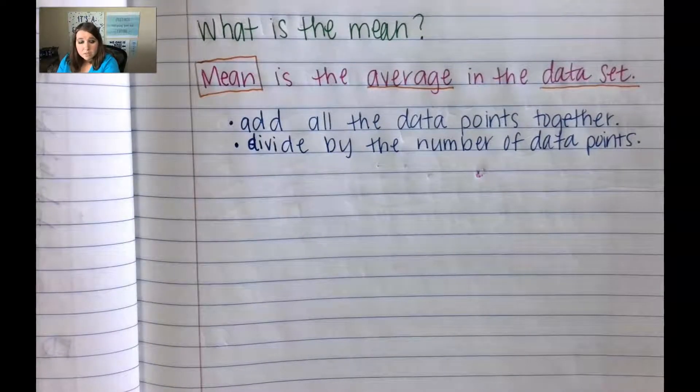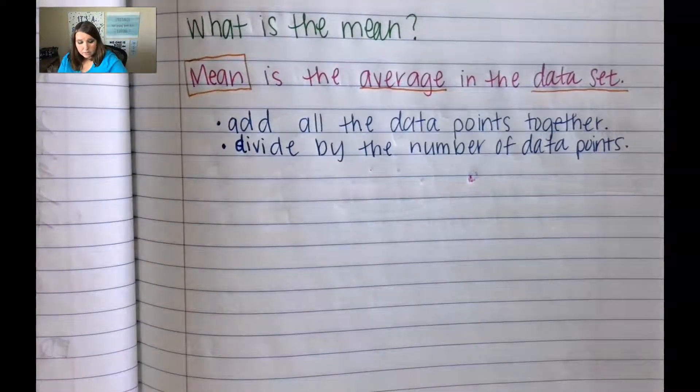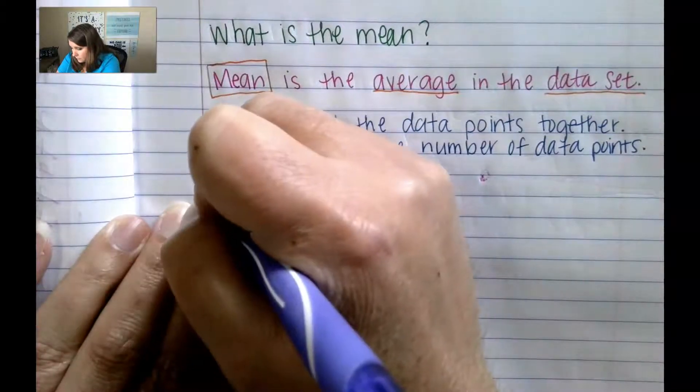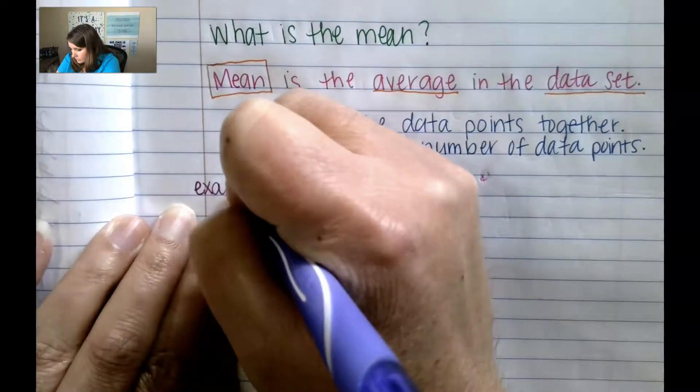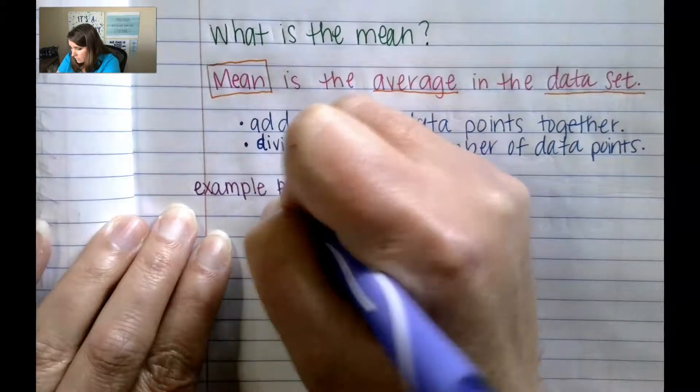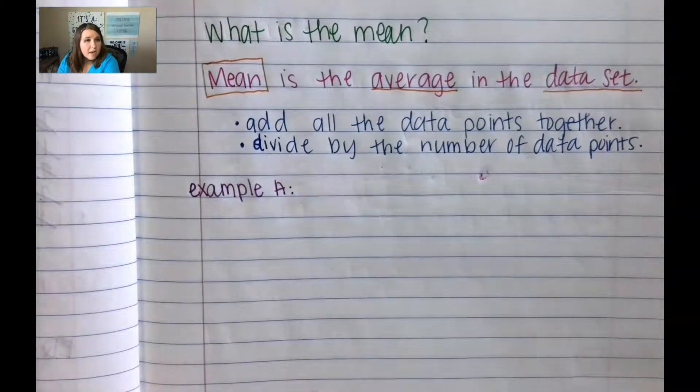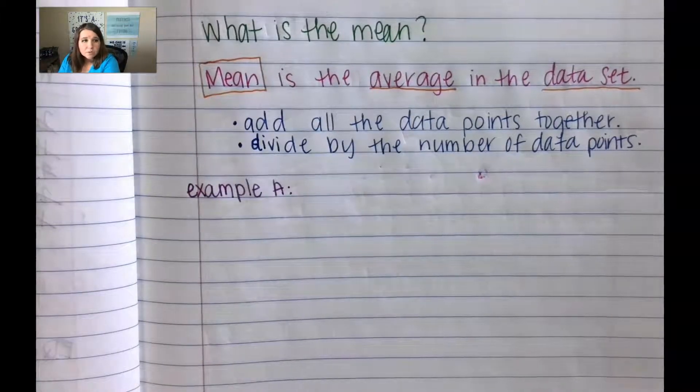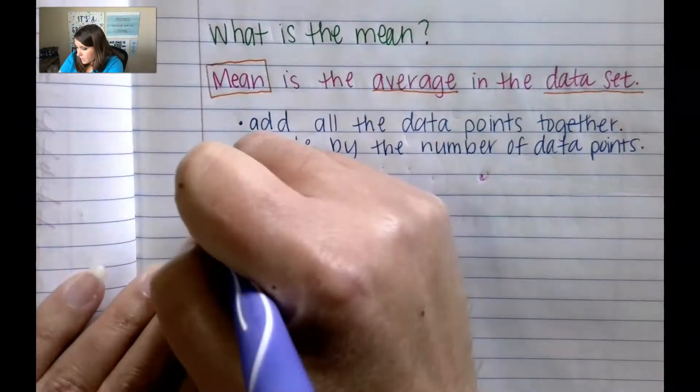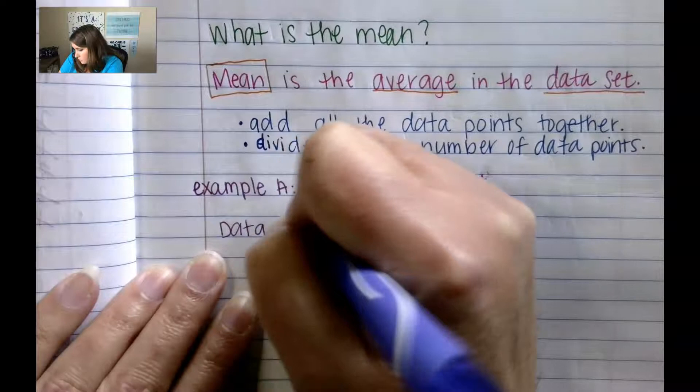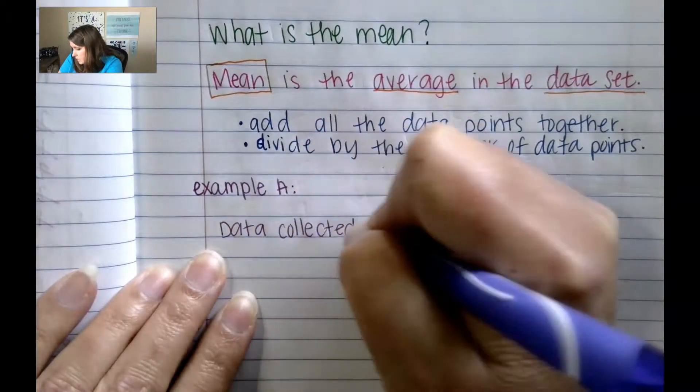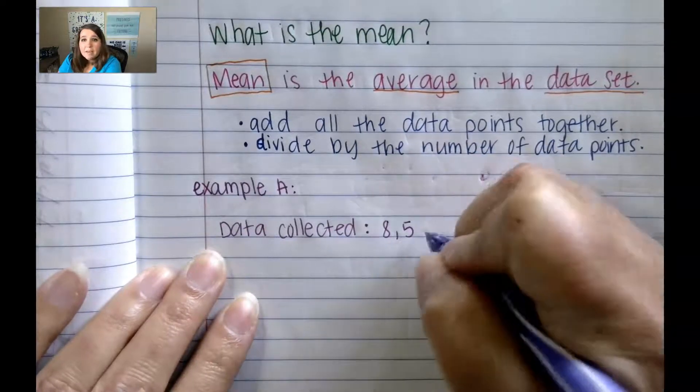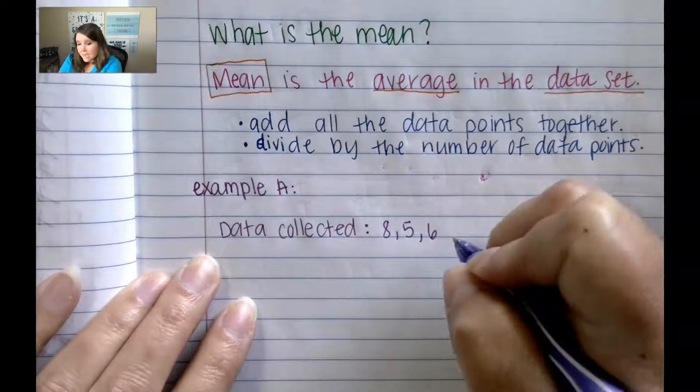So let's see what this looks like as an example. Let's go ahead and look at example A. So example A, we have some numbers that we're going to add all together and then we're going to divide. Let's say that the data collected are the numbers 8, 5, 6, and 9.